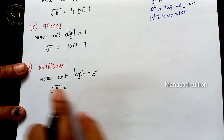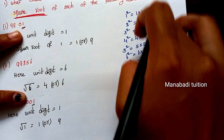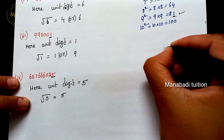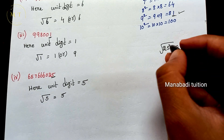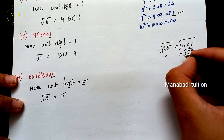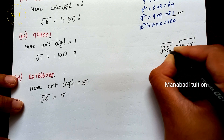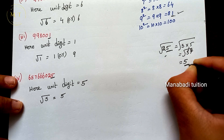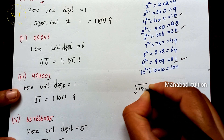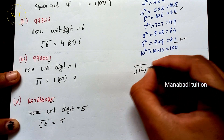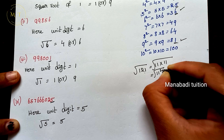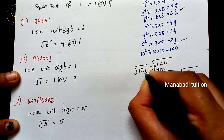The fourth number has unit digit 5. Since 5 squared is 25, which ends in 5, the unit digit of the square root must be exactly 5. So the square root of this number ends in 5.